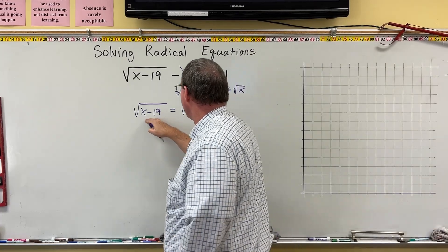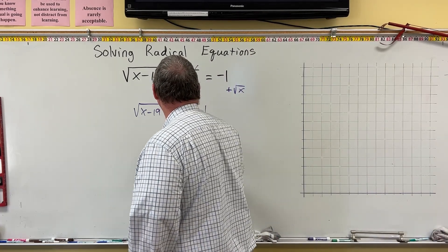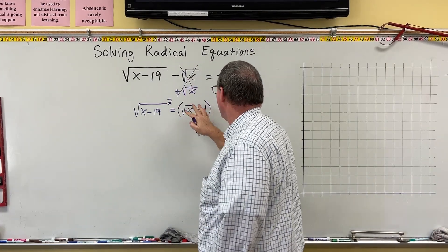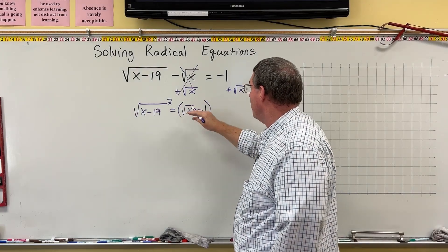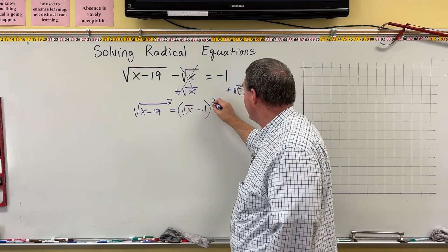And now to cancel this radical, we're going to square it. But on the other side, this is a little weird. We have to square the whole side, not just the radical. So we have to put parentheses around it and square.